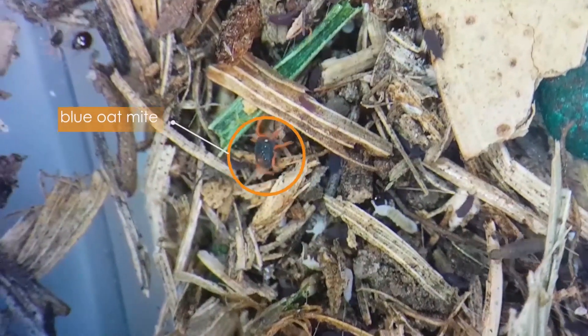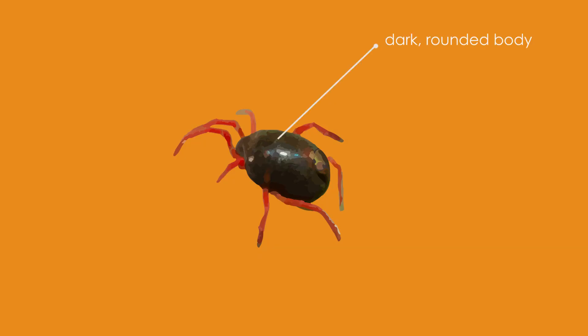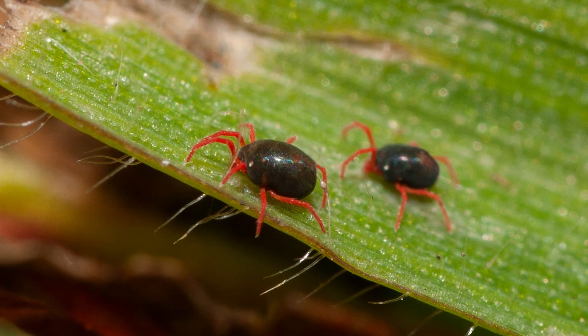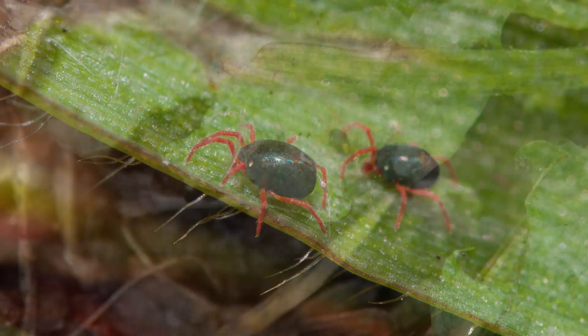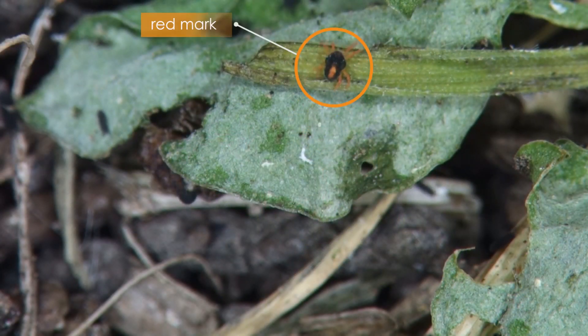There are three species of blue oat mites in Australian broadacre crops and pastures. Like the red-legged earth mite, blue oat mites have dark rounded bodies, eight orange-red legs, and grow to about one millimetre long. But unlike the red-legged earth mite which looks velvety, the body of blue oat mites is a shiny blue-black. Also unlike the red-legged earth mite, blue oat mites have a distinctive red mark on their lower back.